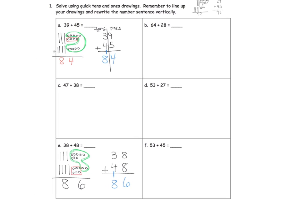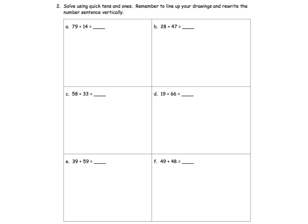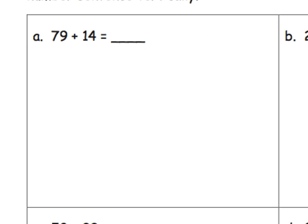And that's the idea for this whole page. The second page is really more of the same — just more practice of drawing the Quick Tens and then connecting it to your vertical standard algorithm. So we'll just do one quick example.